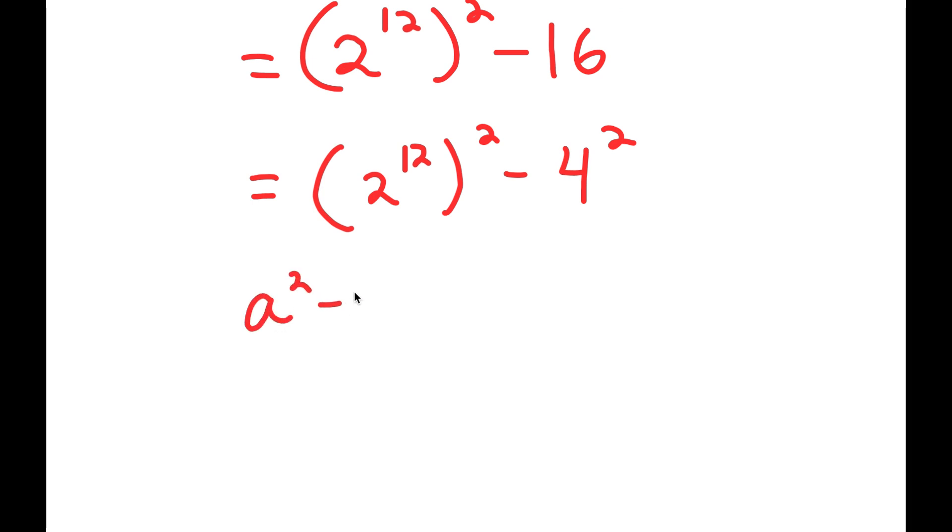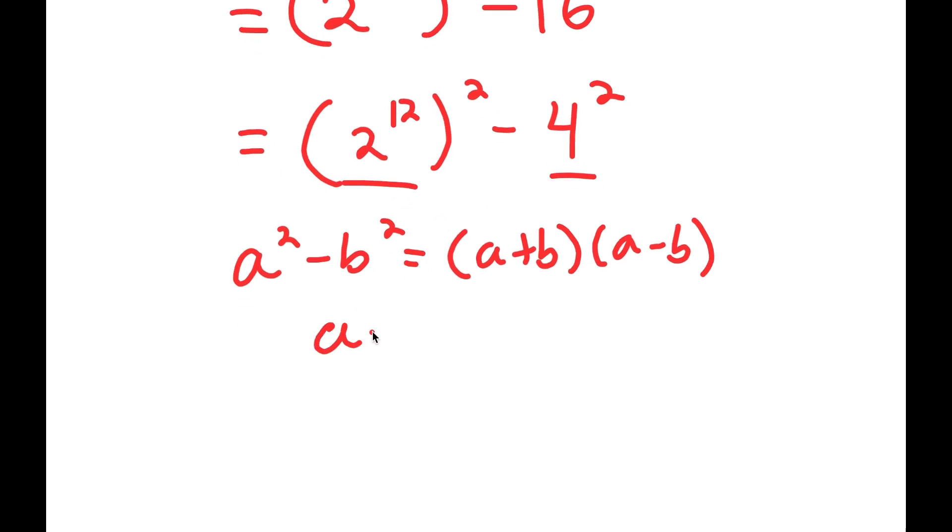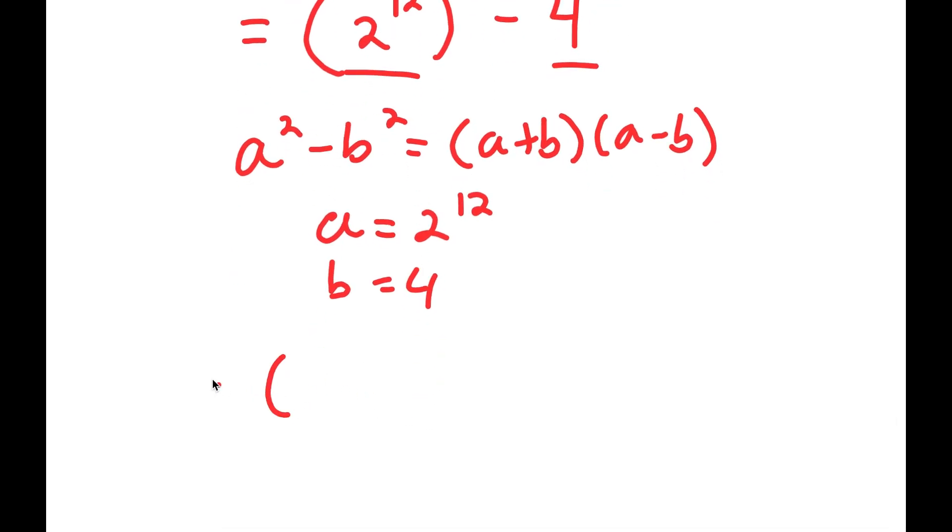Now, if I have something in the form a squared minus b squared, this is equal to a plus b times a minus b. Notice how we have 2 to the power of 12 squared minus 4 squared. So in this case, a is 2 to the power of 12 and b is 4. So I get 2 to the power of 12 plus 4 times 2 to the power of 12 minus 4.